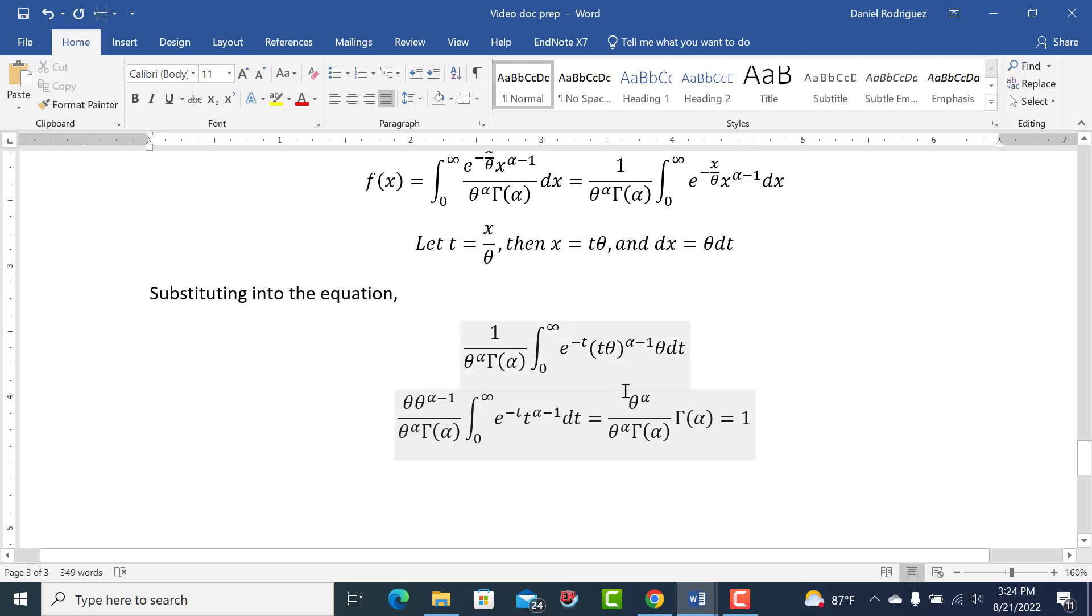So we're left with a theta alpha here, theta alpha in the bottom, so we can cross these two suckers out, and we have a gamma alpha in the denominator.